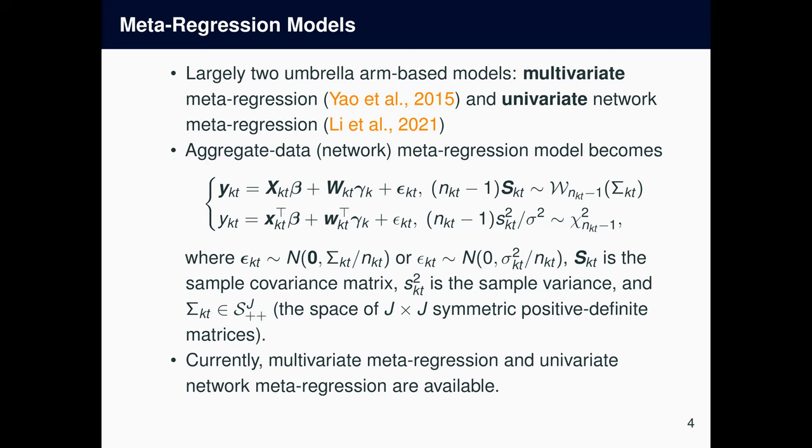So if there's no baseline treatment, because not all trials have to have the same treatments in network metaregression, then it's impossible to model contrast directly. So I emphasize that Metapack does not have such restrictions. Also, we're planning to implement univariate metaregression and multivariate network metaregression in the future, so stay tuned. Anyway, moving forward, Metapack takes ARM-level aggregate data and the related model becomes like this. I will not be describing the models in detail, so if you'd like to pause the video and take a look at the model, please do so. Or if you'd like to read more about the models, please read Yao et al. 2015 and Li et al. 2021 paper.